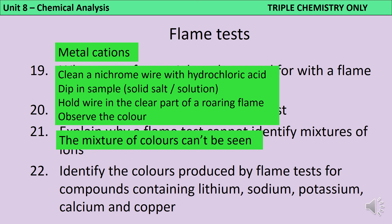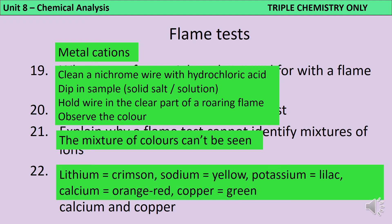Compounds that contain lithium will burn with a crimson flame. Compounds that contain sodium will burn with a yellow flame. Compounds that contain potassium will burn with a lilac flame. Compounds containing calcium will burn with an orange-red or brick-red flame. And compounds containing copper will burn with a green flame.